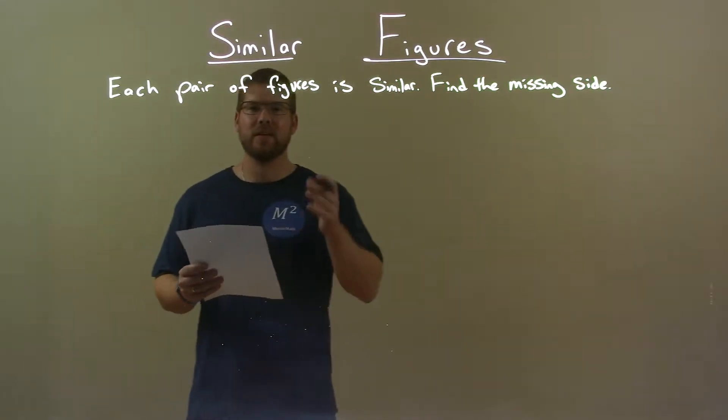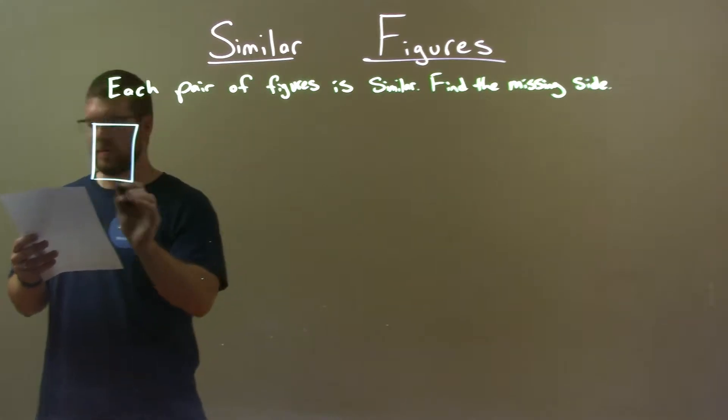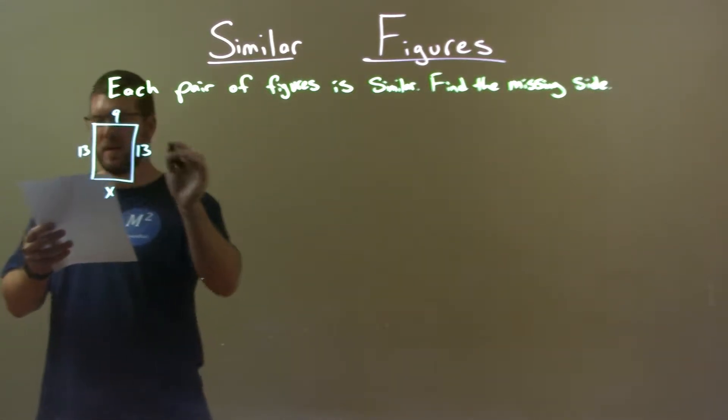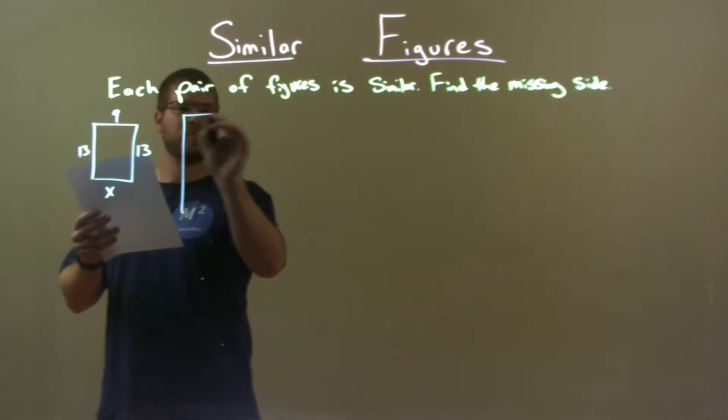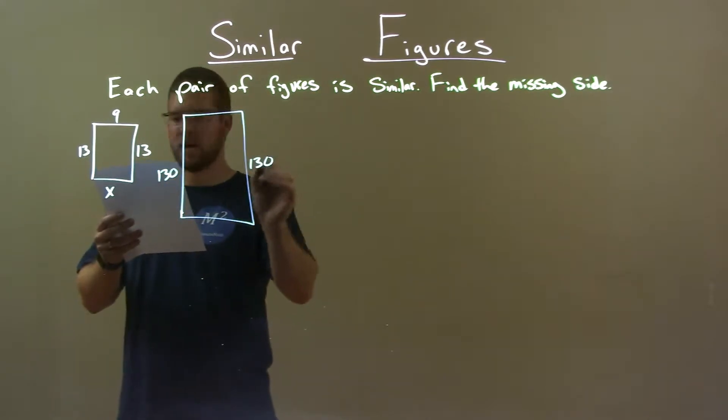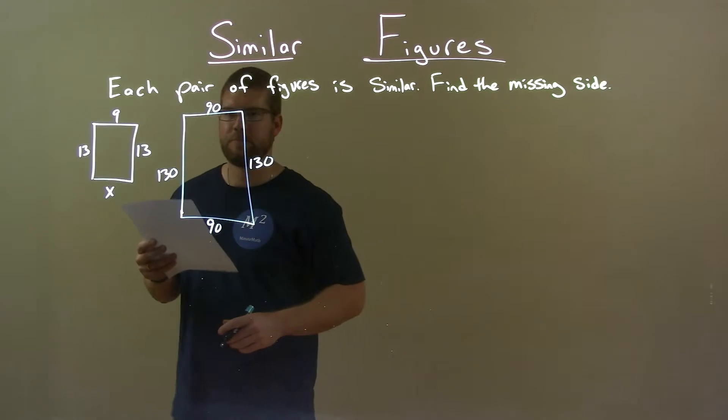If I was given these figures, we've got a rectangle here with X, 13, 13, and 9. And the bigger rectangle that's similar has 130 on the sides and 90 at the base and the height of the top, 90.